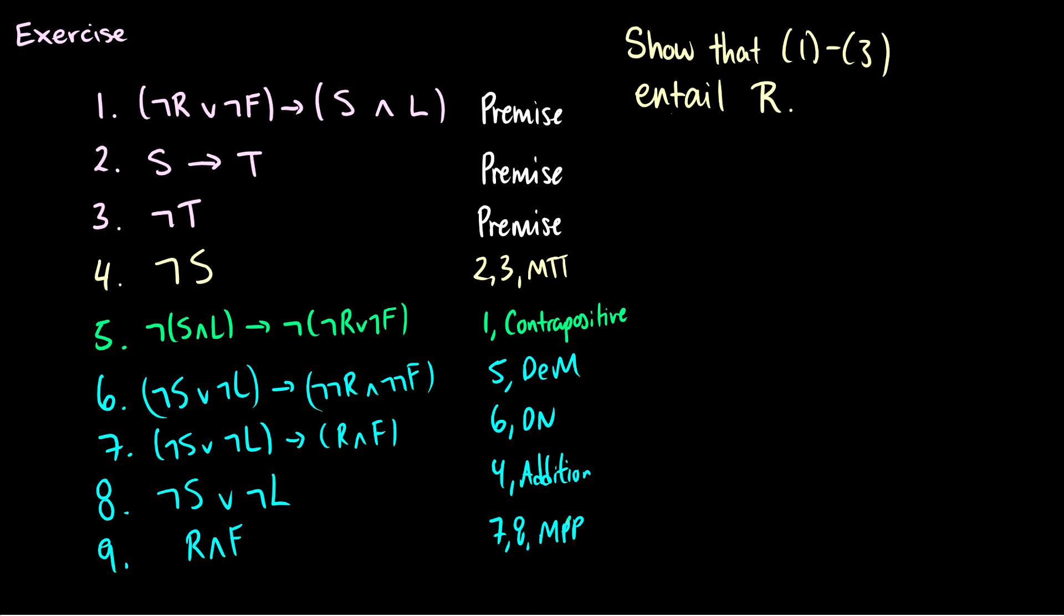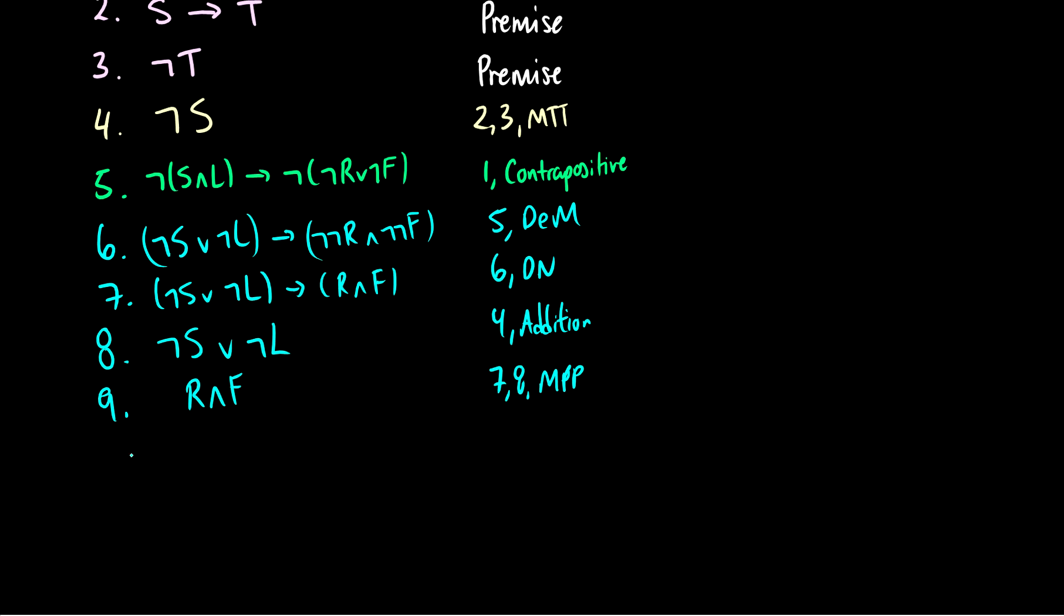Therefore, we can do modus ponens to get R and F. And finally, using simplification, we can pull out R from the conjunction. So that's nine, and that's simplification. So there you go. There is a much more complicated proof of rules of inference, also using some of the logic laws. So rules of inference is really like the capstone, the peak of propositional logic.